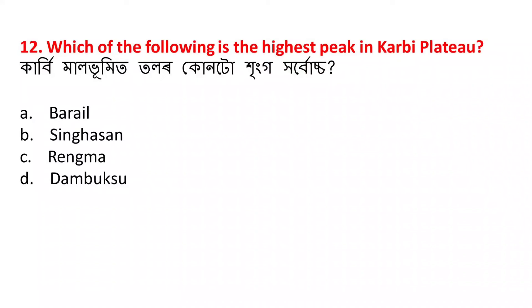Which of the following is the highest peak in the Karbi plateau? Karbi maalohumir ataitkoi utsatam stringer to hole. The answer is B - Singhasan peak.